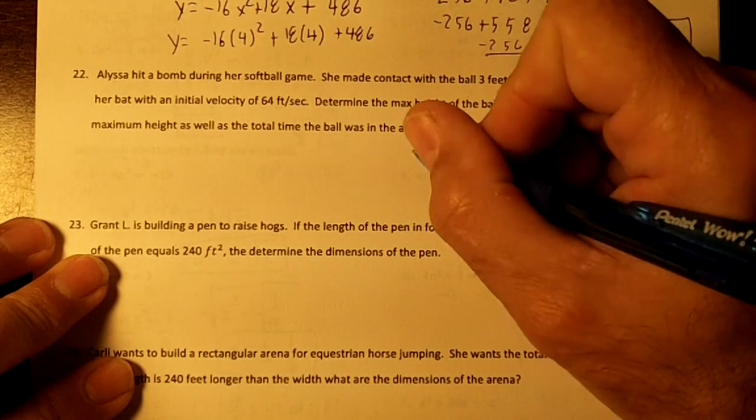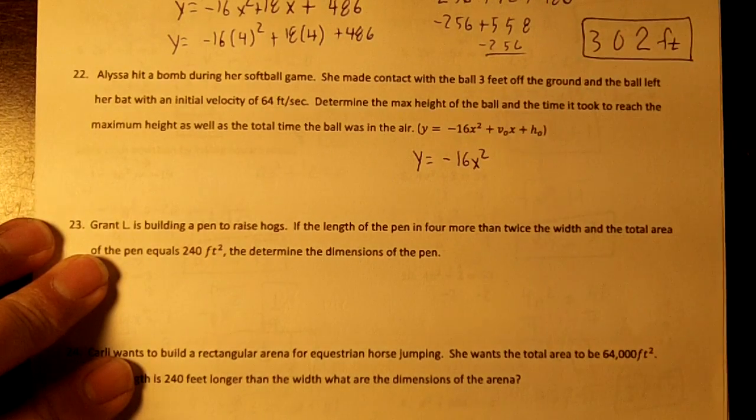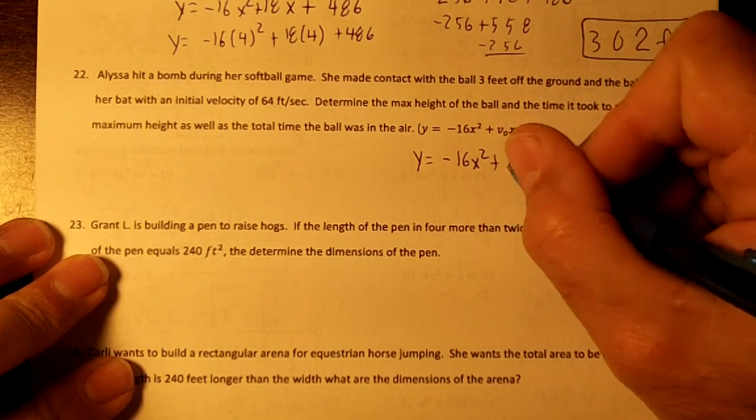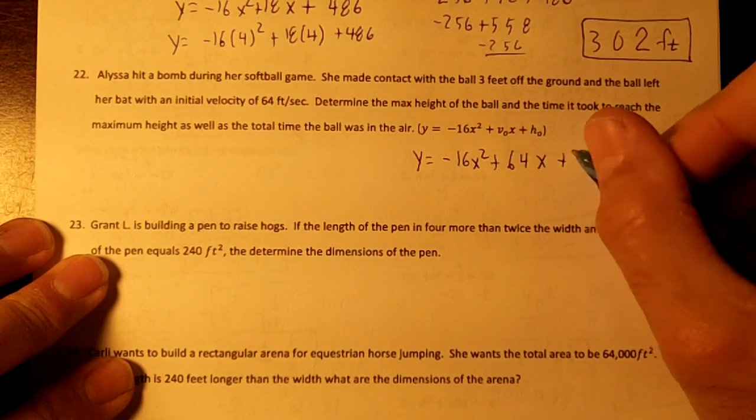Okay, so we're going to write this as y equals negative 16x squared. Our initial velocity is 64, so plus 64x, and it's three feet above the ground, plus three.